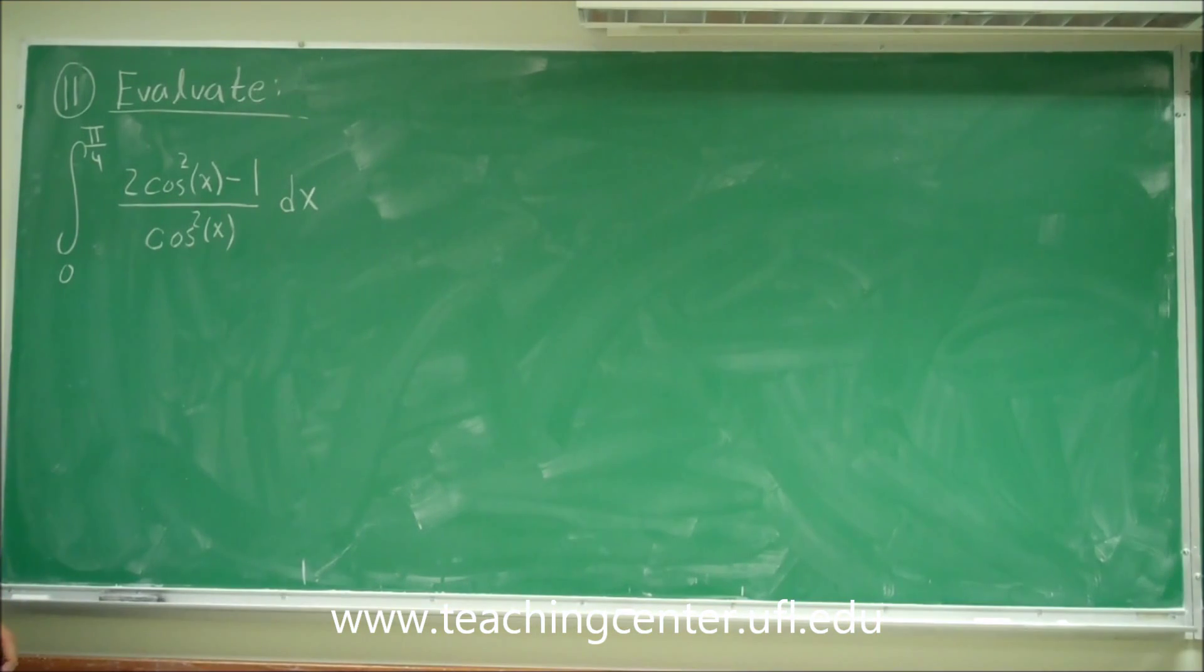Alright, so this is problem 11. We just want to evaluate this definite integral. This integral goes from 0 to pi over 4, and this is what we have to integrate.